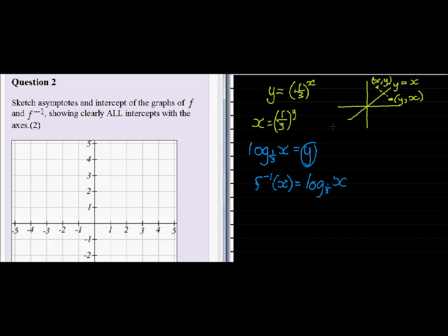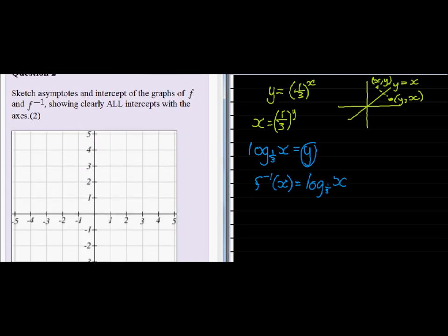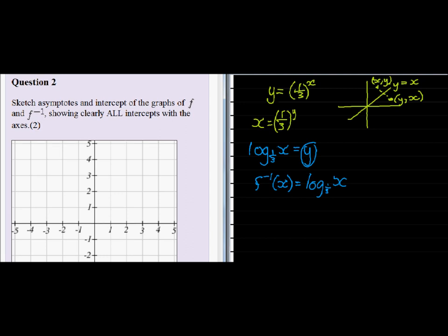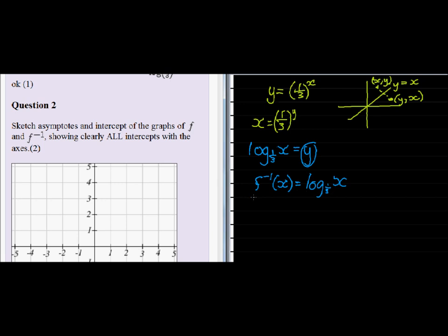Question 2 asks us to sketch the asymptotes and intercepts of the graph of f, which is f(x) equal to a third to the power x, and the graph of the inverse of f, which we just saw is this one that we have here.